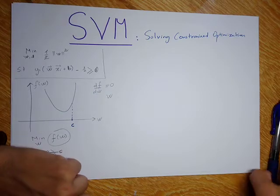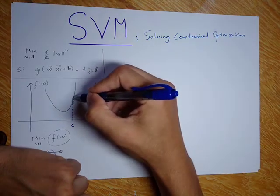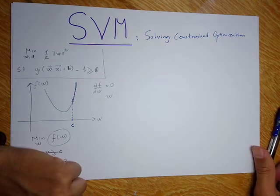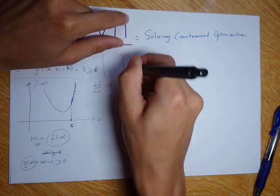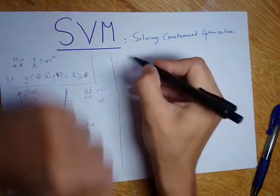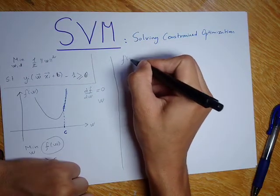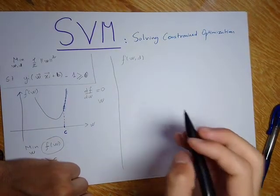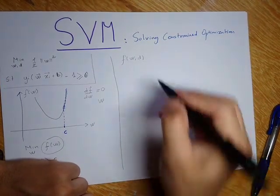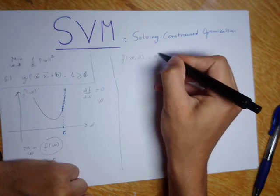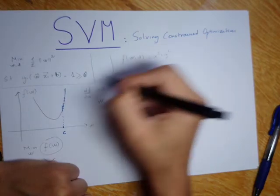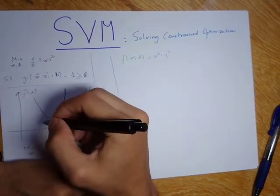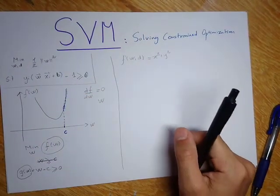In other words, we want to find our solution only in the interval from C to plus infinity. This is another example on two dimensions. Say that I have the same function but on two dimensions — two variables W and D — and say this is equal to x squared plus y squared, which is a convex two-dimensional function.